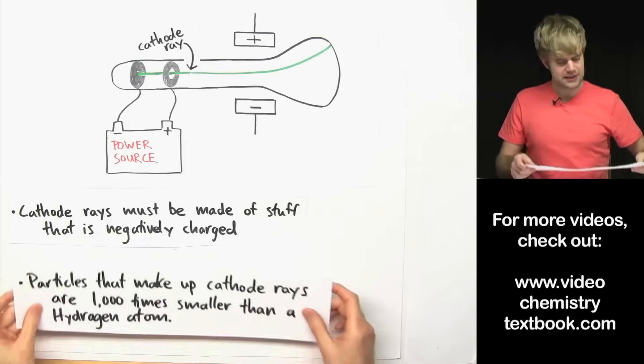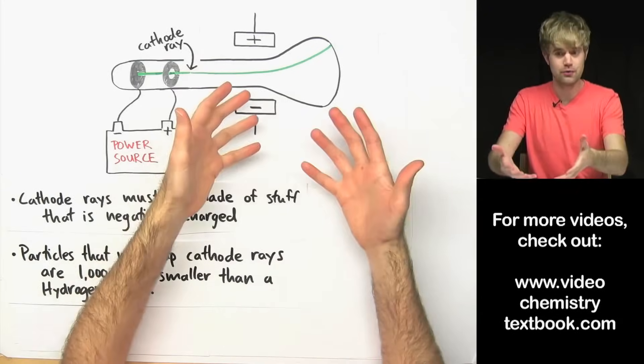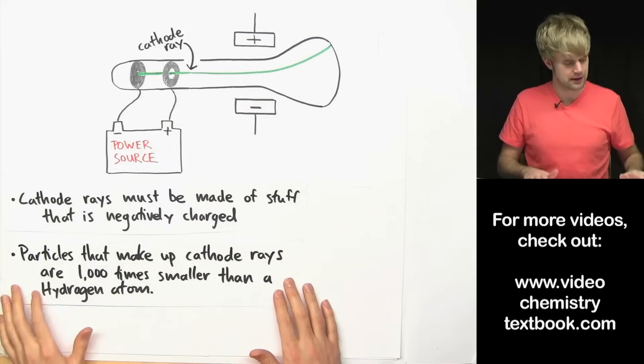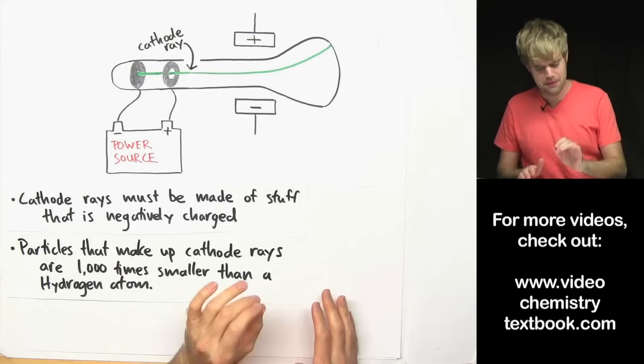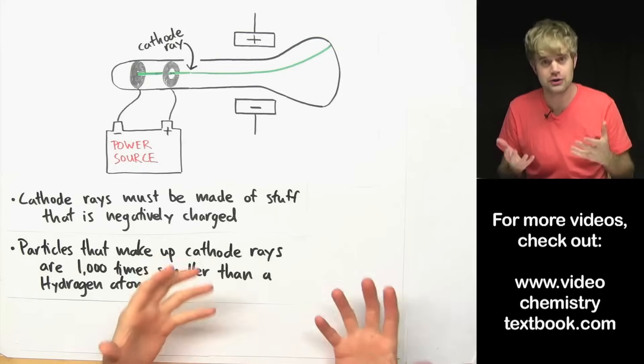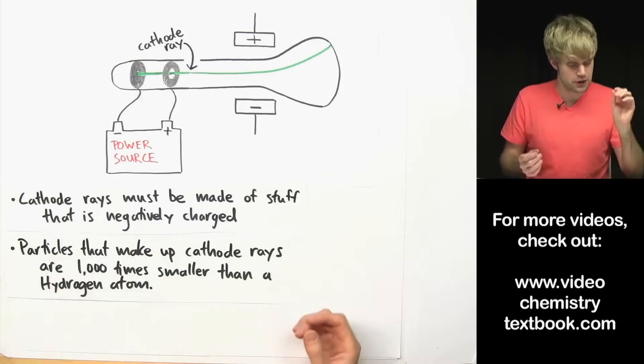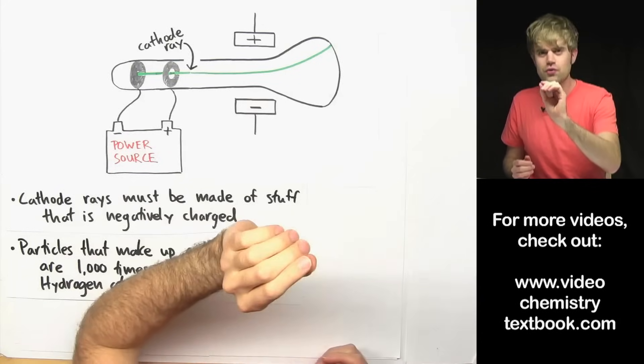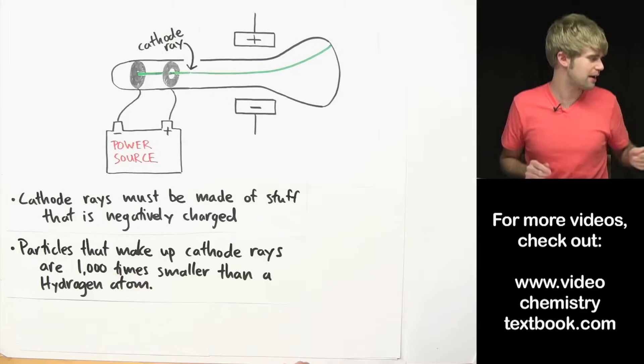He combines the information that he got from the experiments that I just told you about with some other data that he collected. And he's able to come to the conclusion that the particles that make up cathode rays are a thousand times smaller than a hydrogen atom. Hydrogen atoms are the smallest atoms.